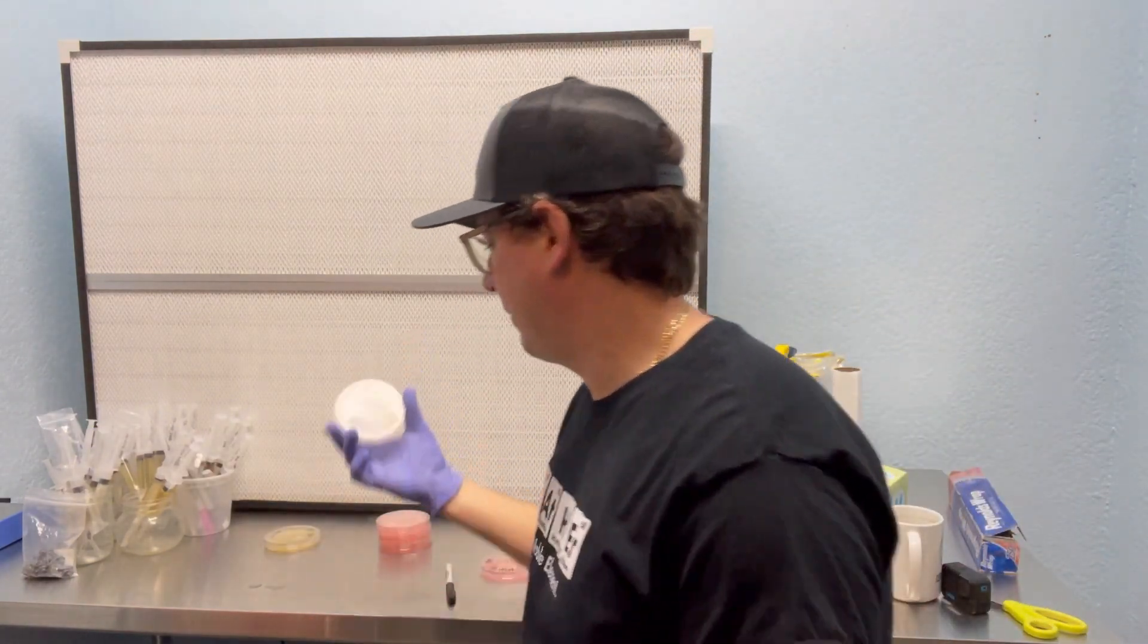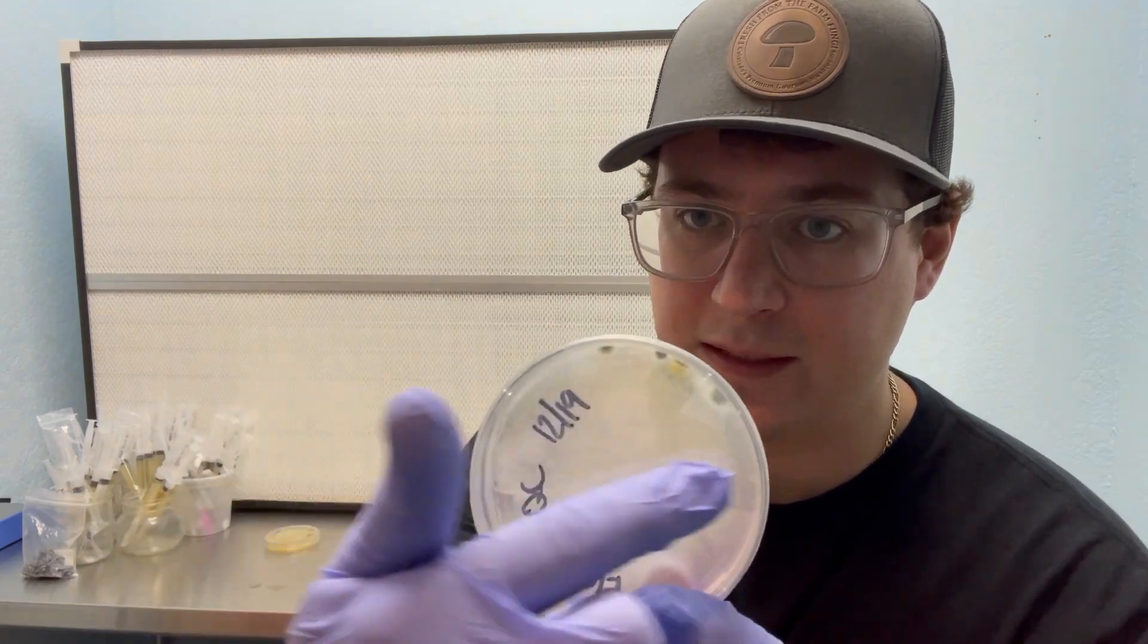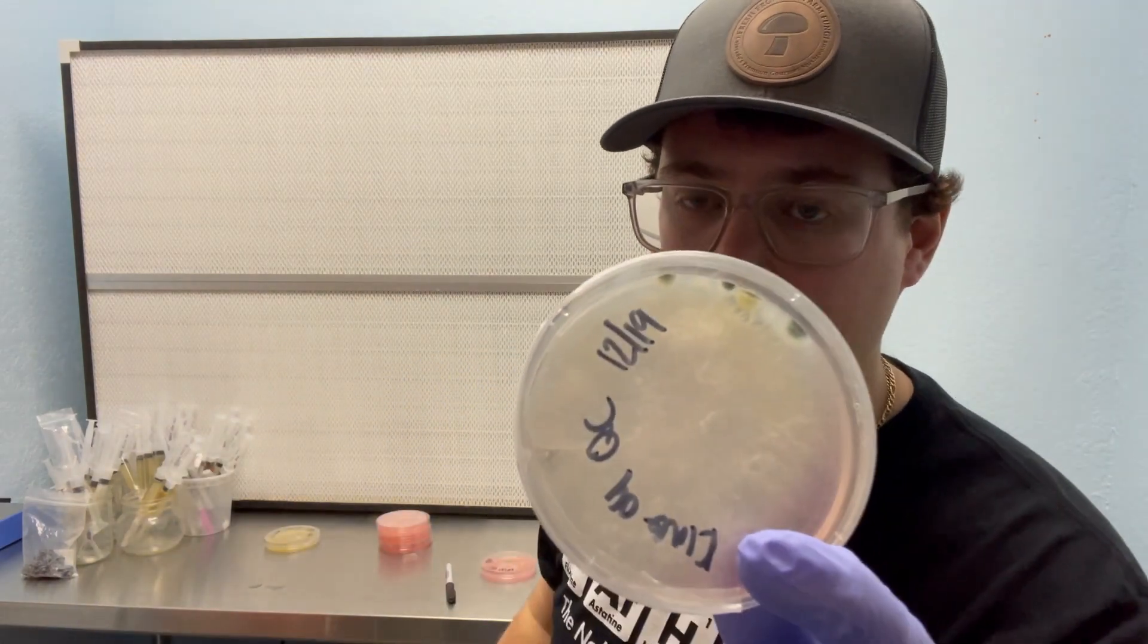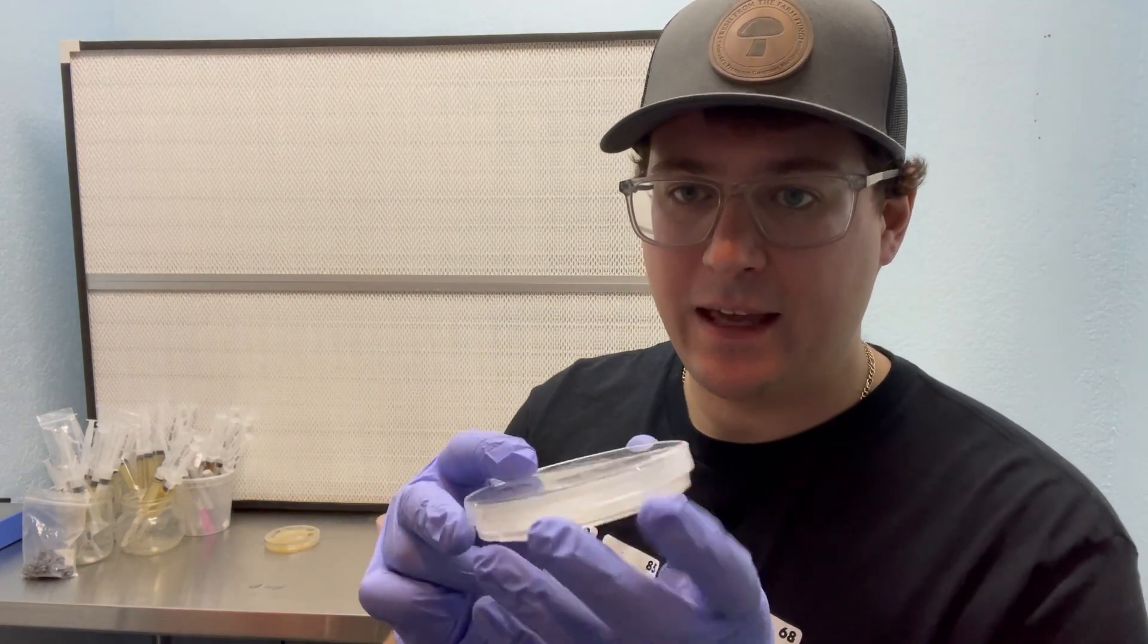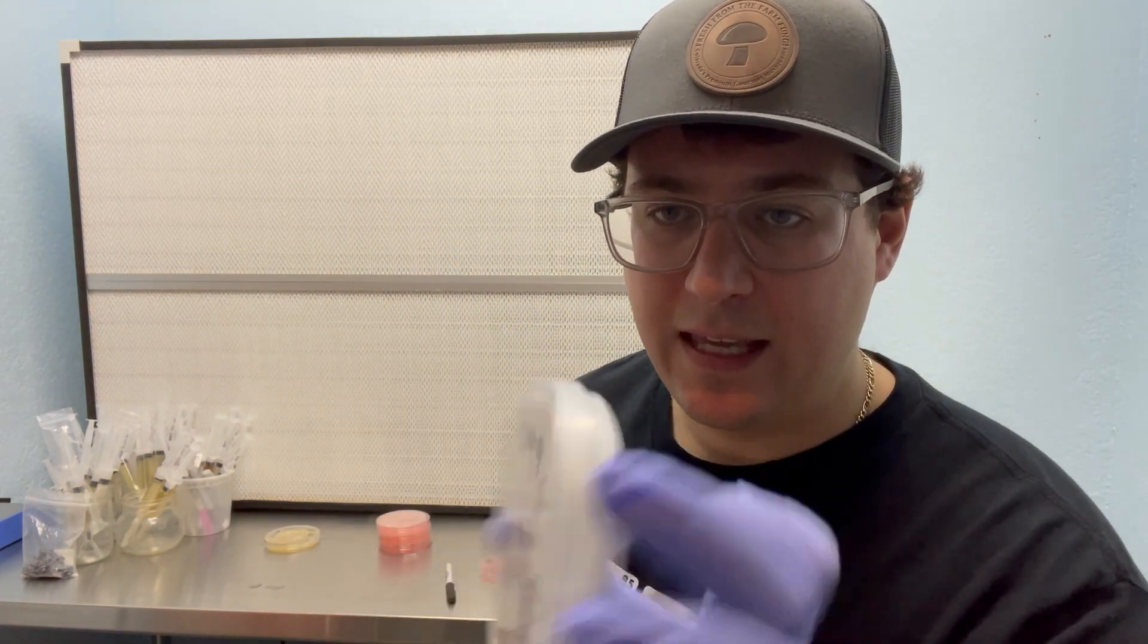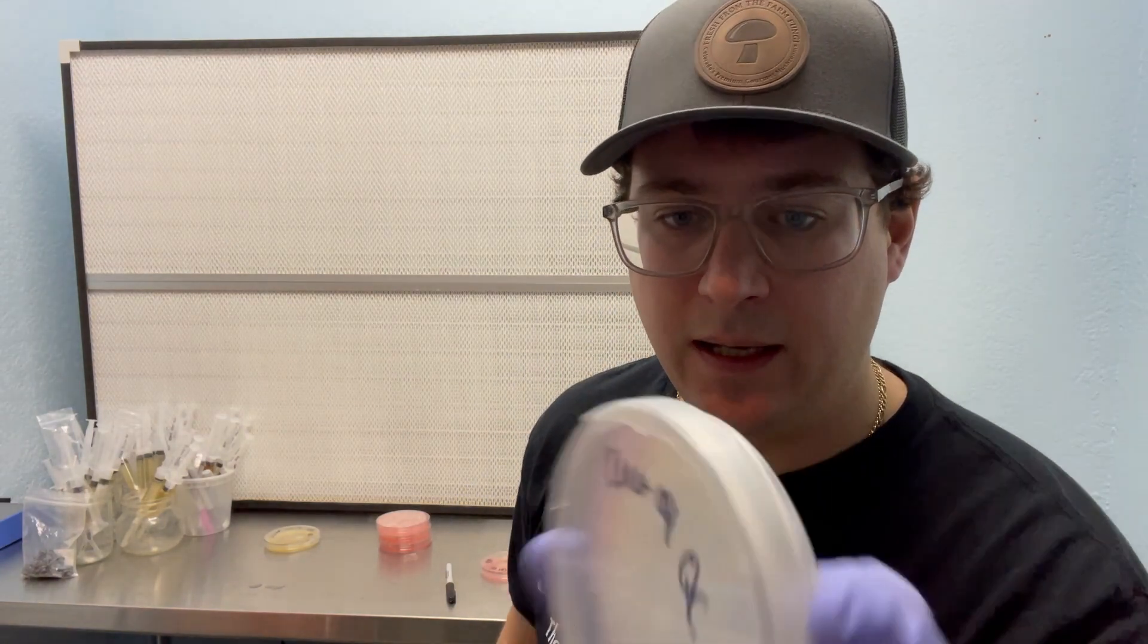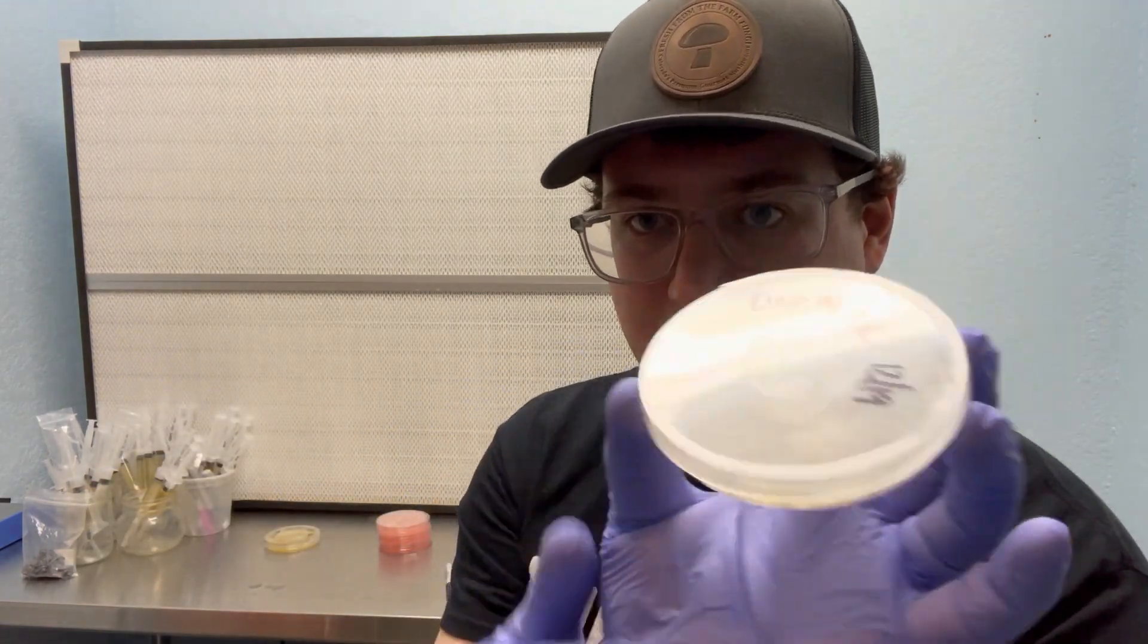Another example of a contaminated dish that probably happened from me is on this plate here. You can see right around the edge, there's some trichoderma or potentially some more penicillium. And that probably happened when I was working with a dish and some contaminants fell near the edge. So this king oyster is also very salvageable.